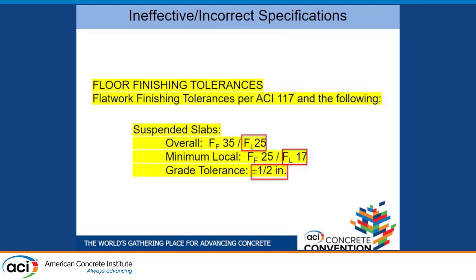For slab on metal deck, I've seen levelness numbers specified. ACL 117 specifically says that there is no elevation tolerance on the erected steel frame — because of all the fabrication tolerances we discussed earlier — and that there is no FL levelness tolerance on the floors, because the system is moving the entire time the concrete is being placed.